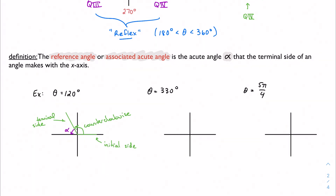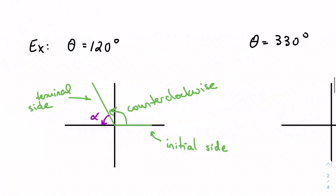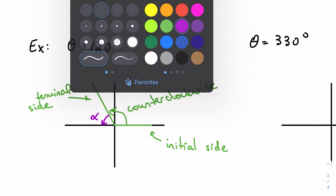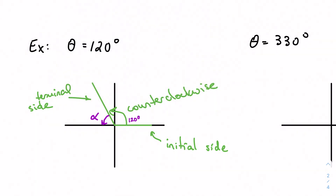That is my reference angle. Let's think geometry for a minute. If this angle is 120 degrees, and the distance from the initial side to the other side of the x-axis is 180 degrees, then alpha, the reference angle, is 60 degrees.